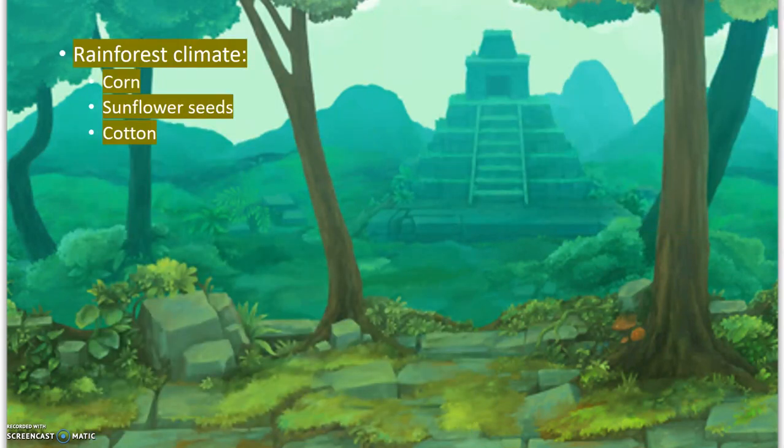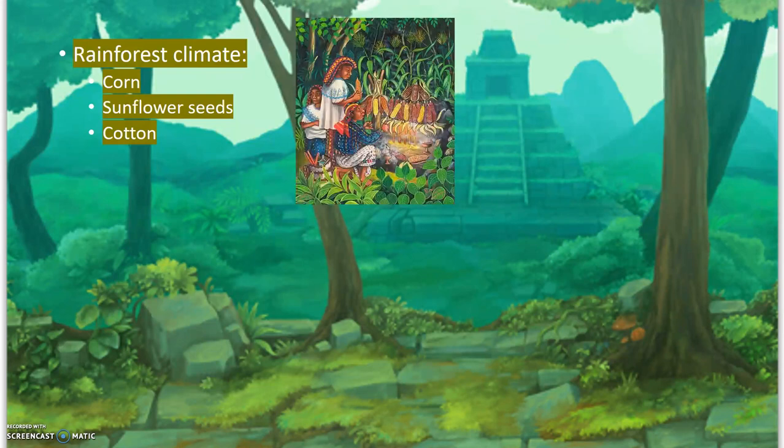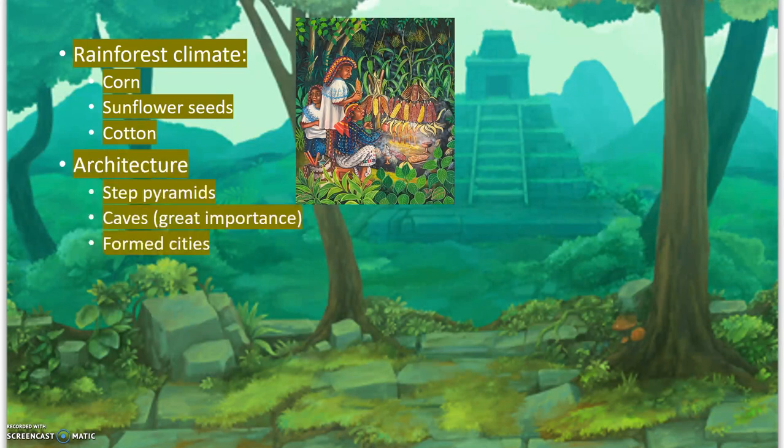They lived in a rainforest climate where they grew corn, sunflower seeds and cotton. They also had raised garden beds with other foods, and they foraged for food within the forest.